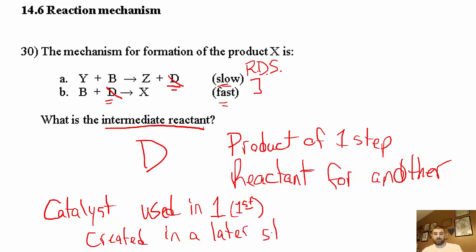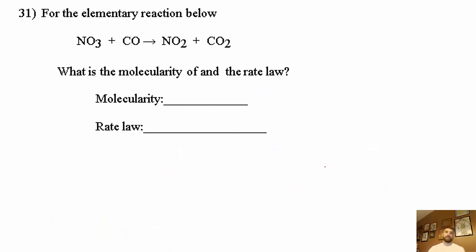Number 31: for the elementary reaction below, what is the molecularity and the rate law? Molecularity has to do with how many molecules are involved in that step. We got two molecules, so we say bimolecular.